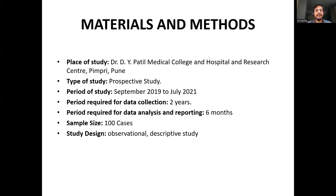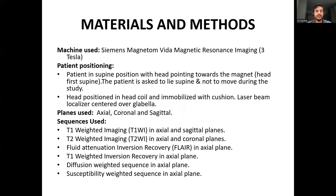Ours was a prospective study conducted over two years from September 2019 to July 2021 with a sample size of 100 cases. Patients were positioned supine with the head pointing towards the magnet, immobilized in a head coil with cushion, and a laser localizer was centered over the glabella. Planes used were axial, coronal, and sagittal. Sequences included T1-weighted imaging, T2-weighted imaging, FLAIR, T1-weighted inversion recovery, diffusion-weighted imaging, and susceptibility-weighted imaging, all in axial plane with additional planes as indicated.